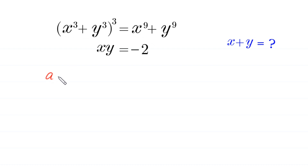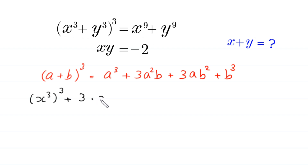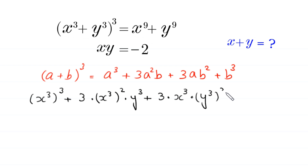Let's start by using the algebraic identity (a + b)³ = a³ + 3a²b + 3ab² + b³. So (x³ + y³)³ will expand using this identity, giving us x³ cubed plus 3 times (x³)² times y³, plus 3 times x³ times (y³)², plus y³ cubed, which equals x⁹ + y⁹.